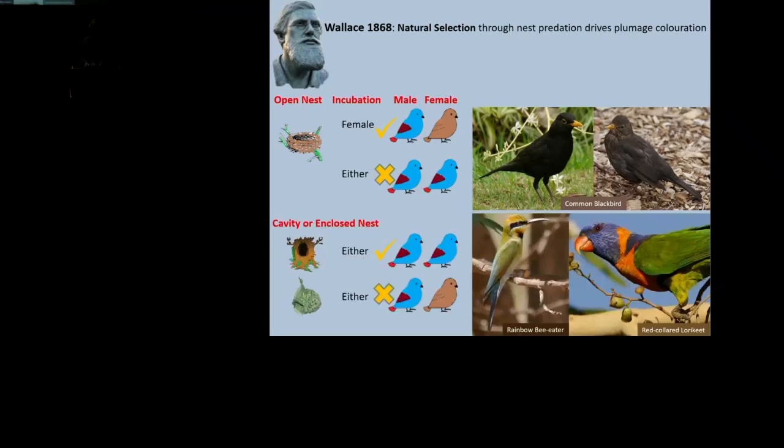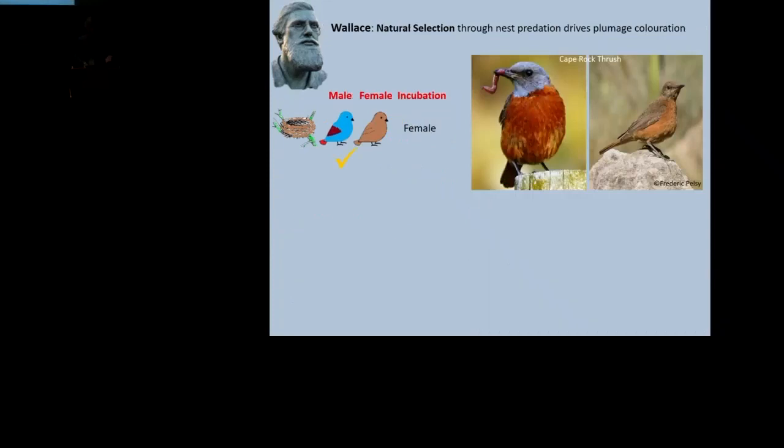He also said that if birds nest in holes, or they're making closed nests, then there was no selection pressure, so females could be brightly colored. And I suspect, I've put in a couple of photographs from Northern Australia, because he was based a lot in Molucca, he was probably thinking of birds like this, where the pattern is very true. So he said that there should not be cryptically colored, but the other bird hole-nesting birds. If you look in an African context, how do his ideas stack up? Well, you need to know which bird does the incubation.